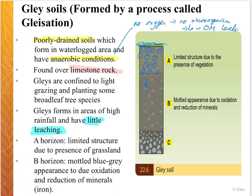With little leaching, that means the A horizon isn't going to bleach, so it won't be light in colour. Our A horizon is going to be limited in structure due to the presence of grassland, and that is to do with the fibrous roots in our grass and our B horizon. A key characteristic of gleyed soils is that the B horizon is mottled blue-gray in appearance.